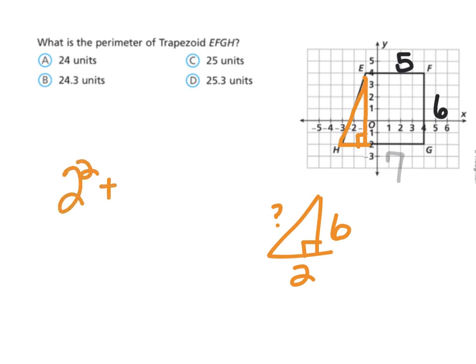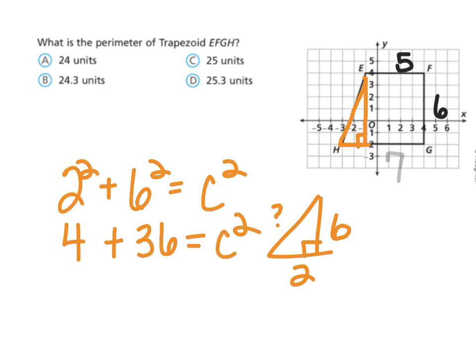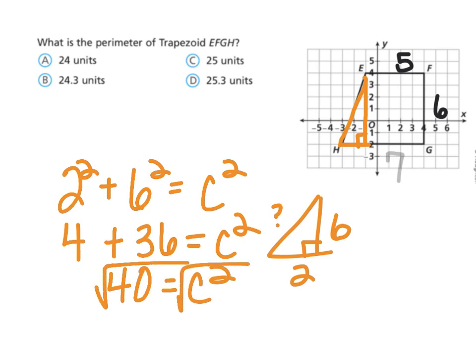It's a right triangle, so: two squared plus six squared equals C squared. Two squared is four, six squared is 36, so four plus 36 equals C squared, giving 40 equals C squared. Take the square root of both sides — the square root of 40 is approximately 6.3. So this diagonal side is 6.3 units. To find the perimeter of the whole trapezoid, I add all sides: five plus six is 11, plus seven is 18, plus 6.3 gives 24.3 units as the perimeter.